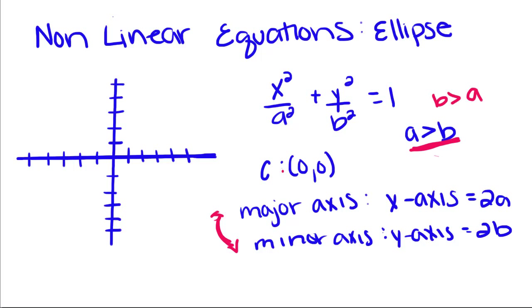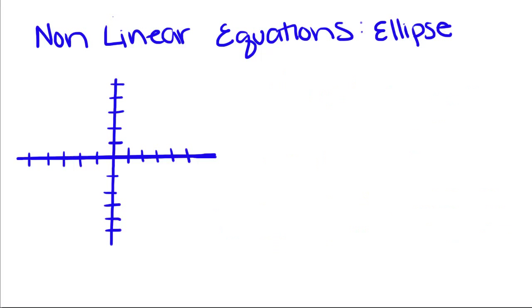That probably won't make much sense now, but we're going to do an example. So we have x squared over 9 plus y squared over 4 equals 1. So a is equal to, you have to remember that this is a squared and this is b squared. So a is equal to 3, b is equal to 2.